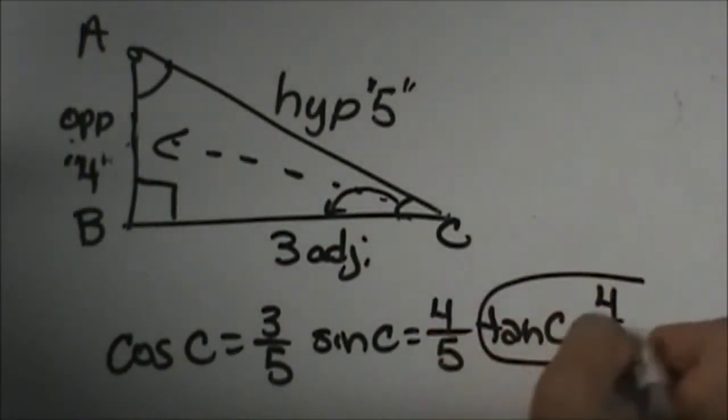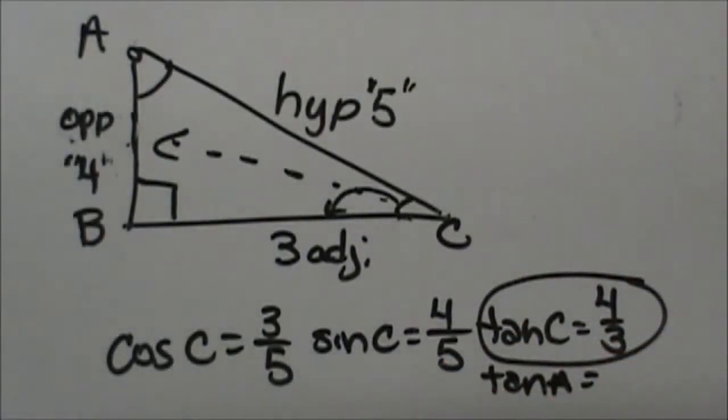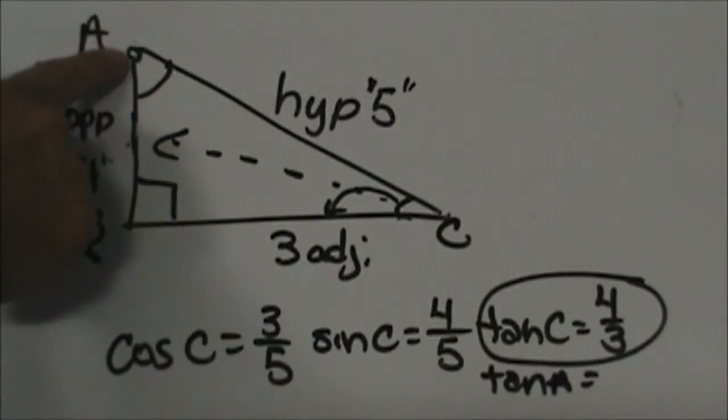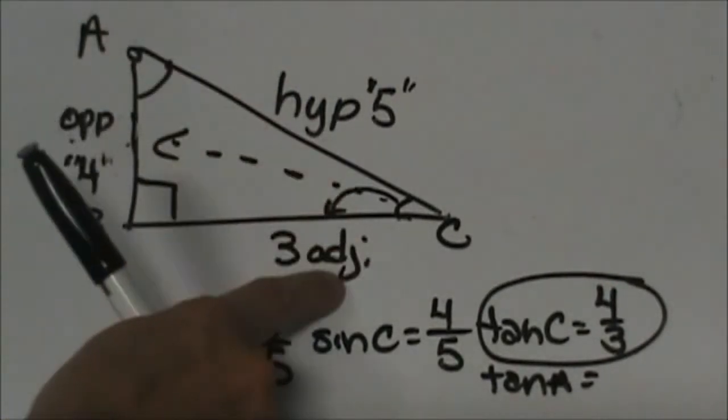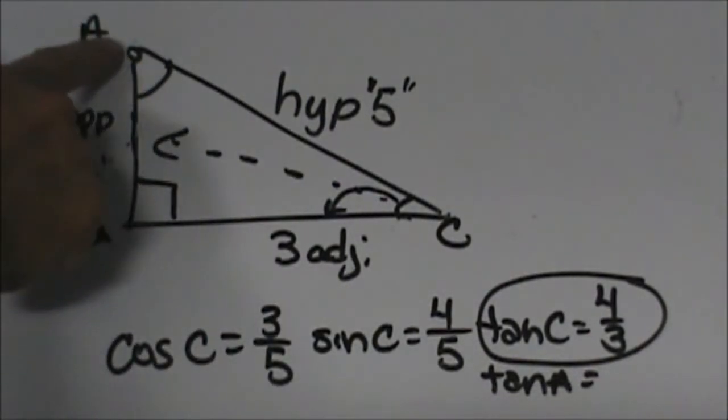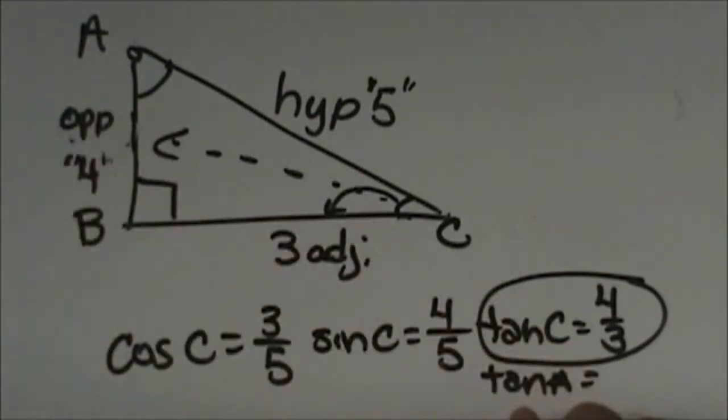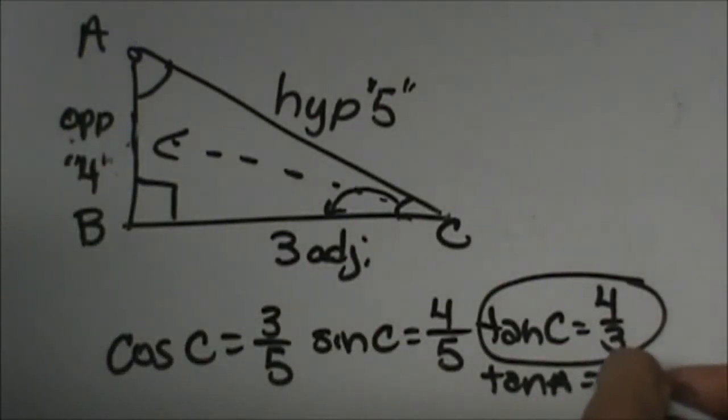Now what would be the tangent of A? From angle A we would do the opposite over the adjacent. So now I'm changing my perspective. From angle A, 3 is the opposite and 4 is the adjacent. So the tangent of A would be 3 fourths.